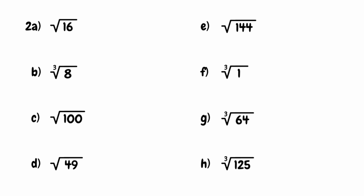For this first question, we don't have a number attached to the root, so we're looking for the square root. We want to find the number that when multiplied by itself gives us 16. This would be 4, because 4 multiplied by 4 gives us 16. So the square root of 16 is 4. When dealing with square roots or any even index roots, we could also consider a negative answer — negative 4 times negative 4 also gives positive 16. However, when presented with the radical symbol, we're only looking for the positive root, also referred to as the principal root.